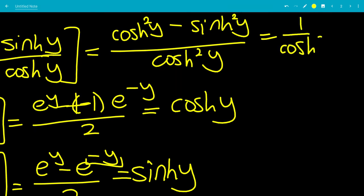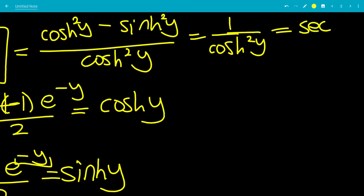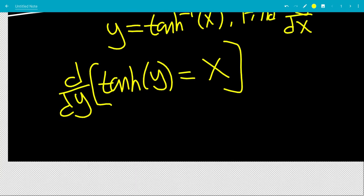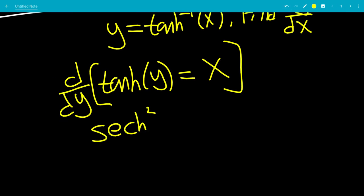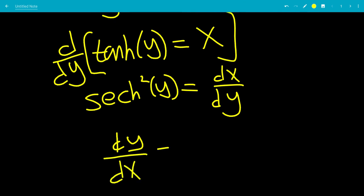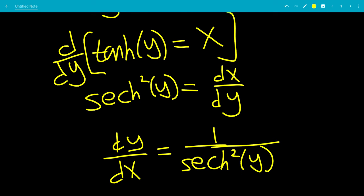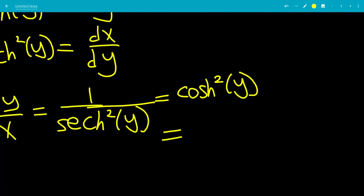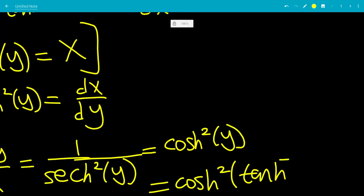So the numerator equals 1, giving us 1 over cosh squared of y, which is sech squared of y. That is the derivative with respect to y of tanh of y. So sech squared of y equals dx dy. To get dy dx, we take 1 over sech squared of y, and since 1 over sech is cosh, this equals cosh squared of y, where y is tanh inverse of x.